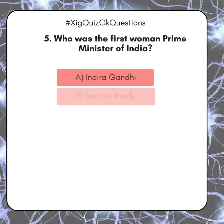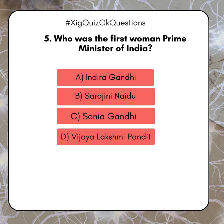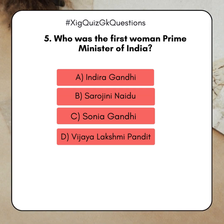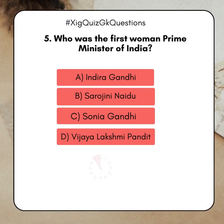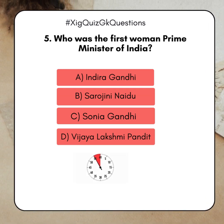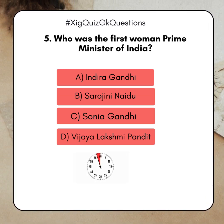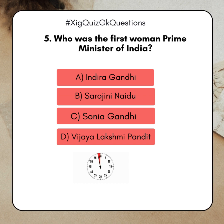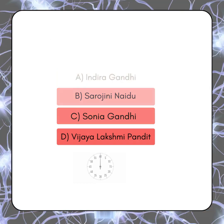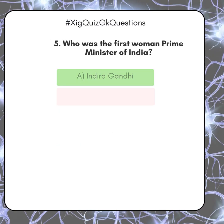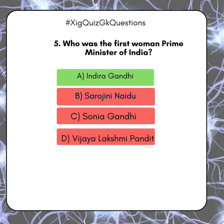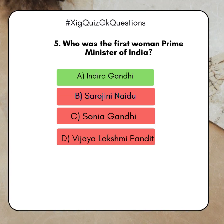Who was the first woman Prime Minister of India? A. Indira Gandhi. B. Sarojini Naidu. C. Sonia Gandhi. D. Vijaya Lakshmi Pandit. Answer: A. Indira Gandhi.